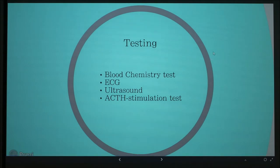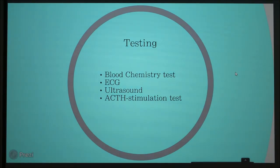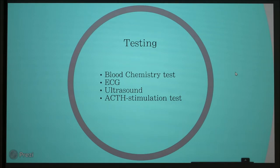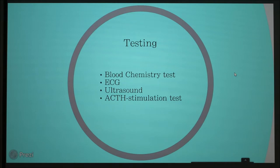You have to do testing to be sure of what you're really looking at. There's a blood chemistry test that's typically done first. On the blood chemistry test, you're going to see increased levels of creatinine and blood urea nitrogen, which often leads to misdiagnosis as kidney disease or failure — but then the patient responds well to fluids, so obviously that's not the correct diagnosis. Some vets will go on and do an ECG, which rules out heart disease, which might have been a possibility since you had the irregular heartbeat from the potassium buildup.